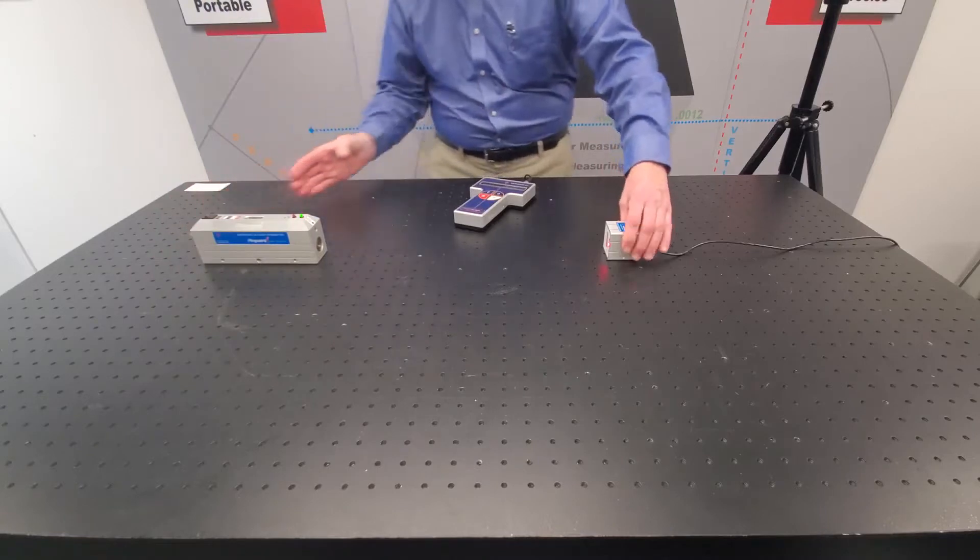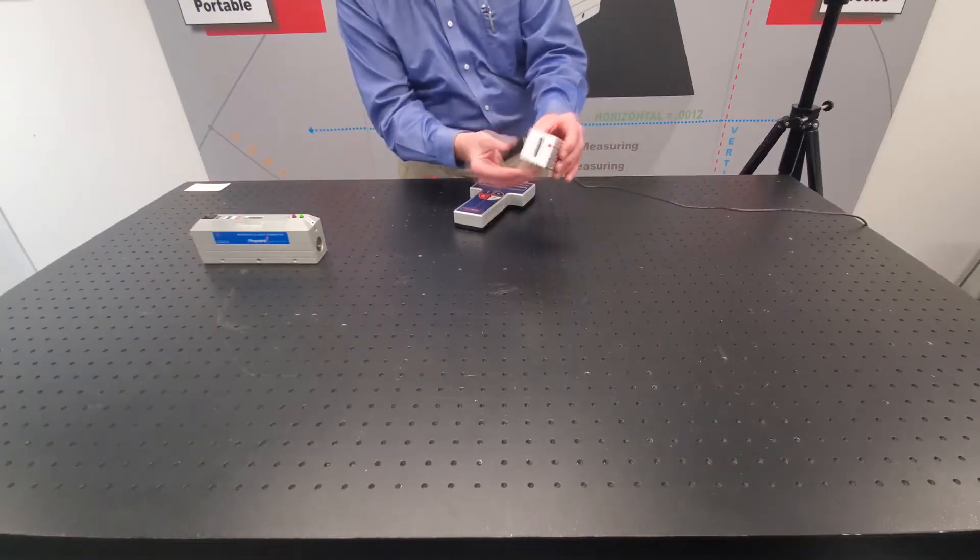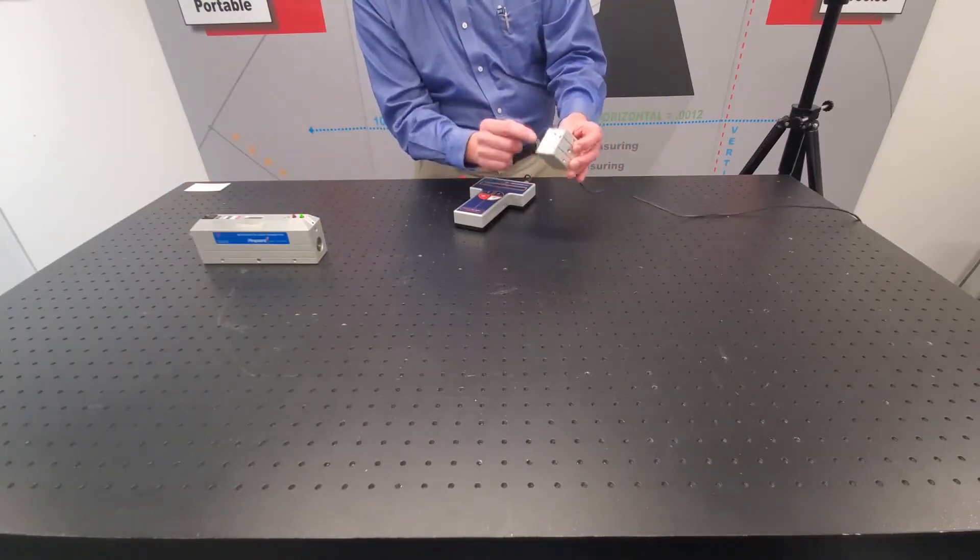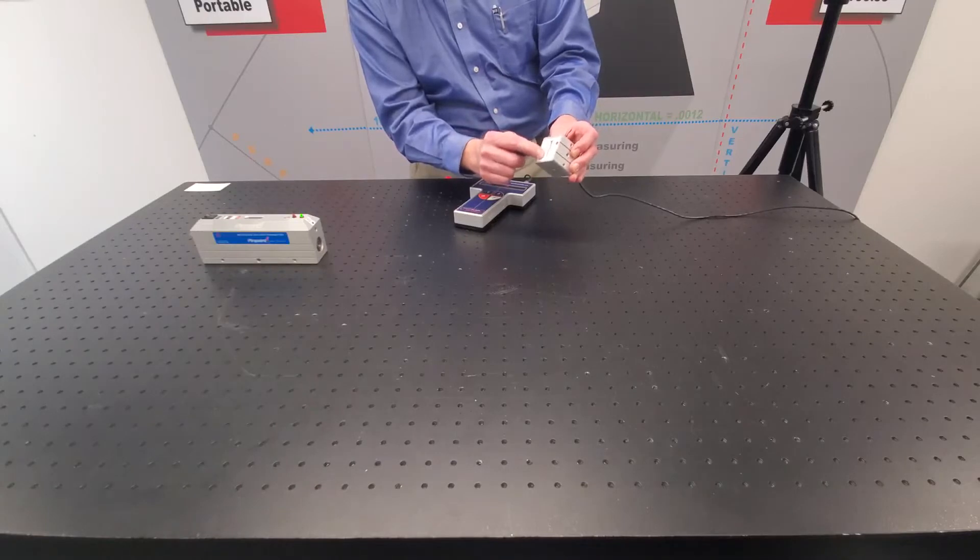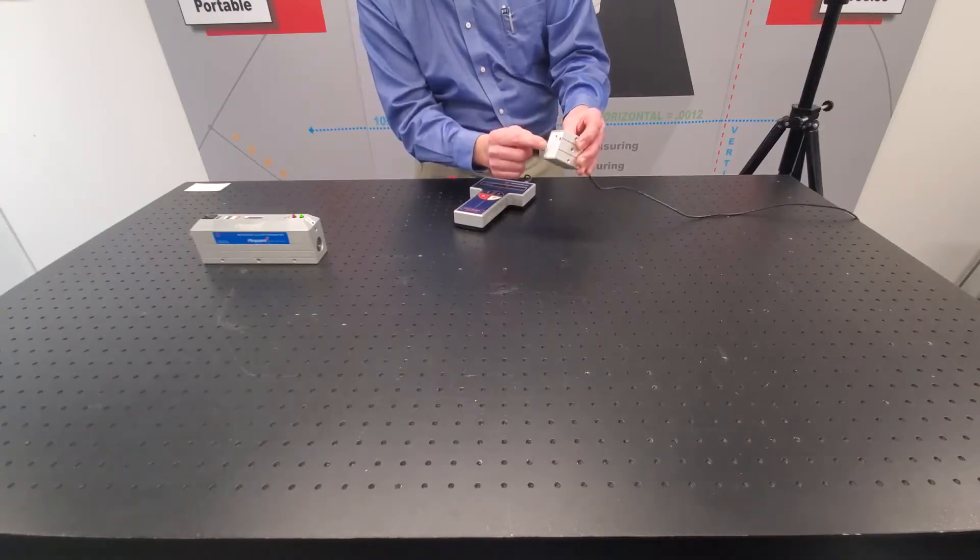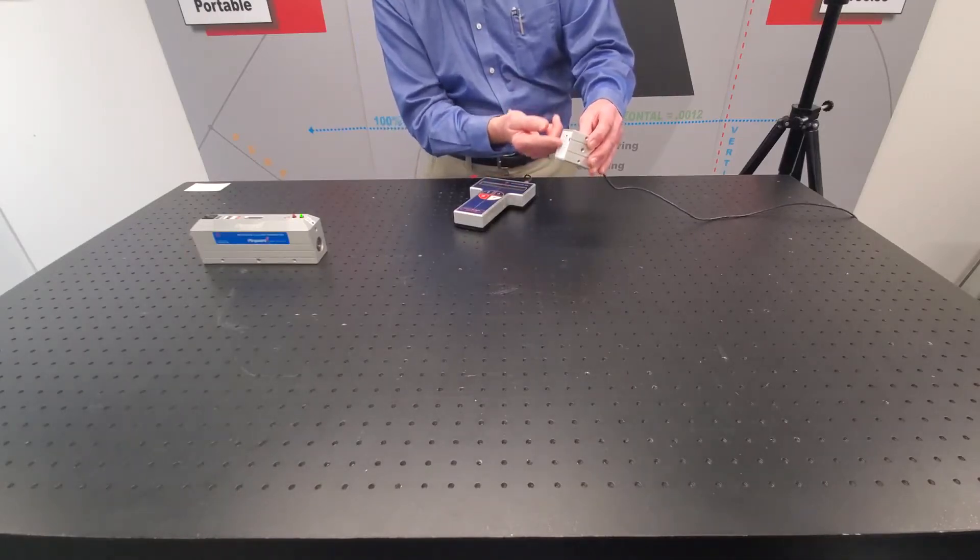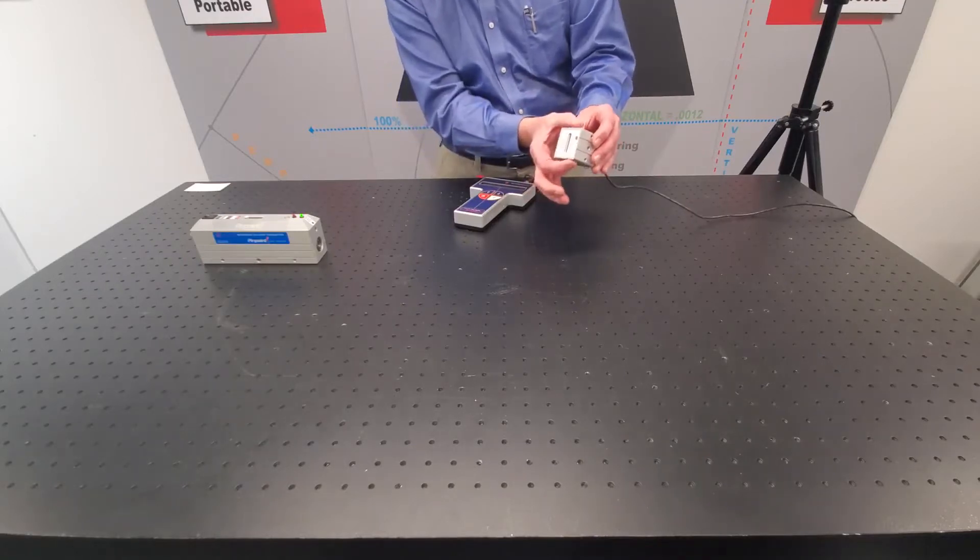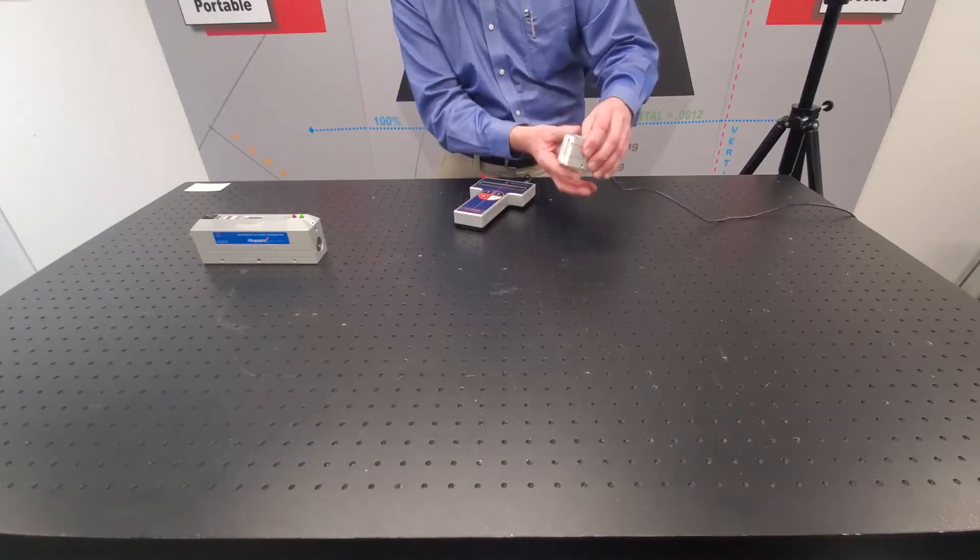The digital receiver is also a machined housing with mounting points on it and a long port in the end where the laser beam goes in, and an electronic detector measures precisely where that laser beam is hitting relative to the machined features on this housing.